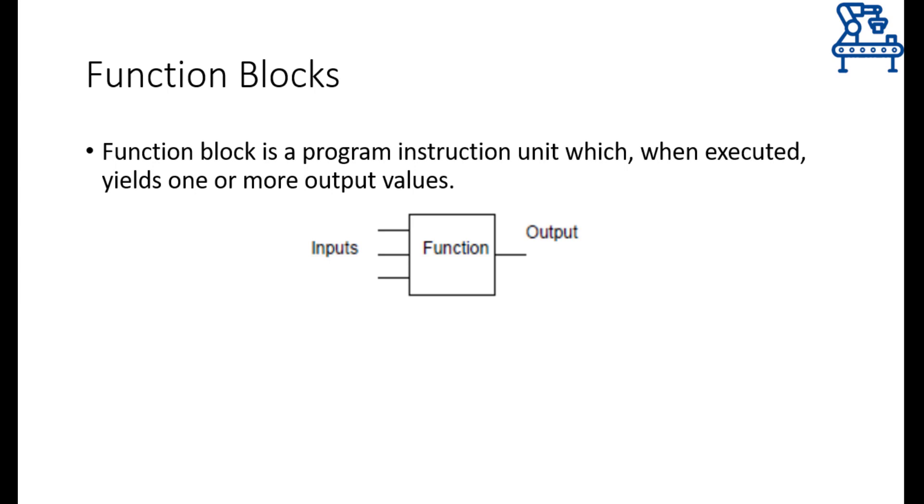Generally, a function block is represented like this where inputs are always on the left side and outputs are on the right side. The block in between the inputs and outputs contains the set of instructions that generate the outputs using the given inputs. The block is generally named according to the function it is performing. We will see several examples in a bit to understand the naming of function blocks.